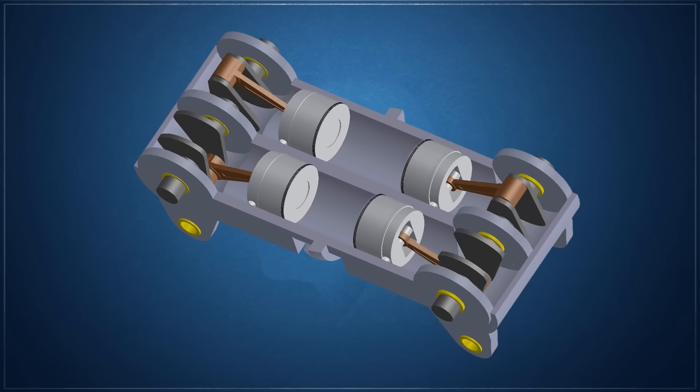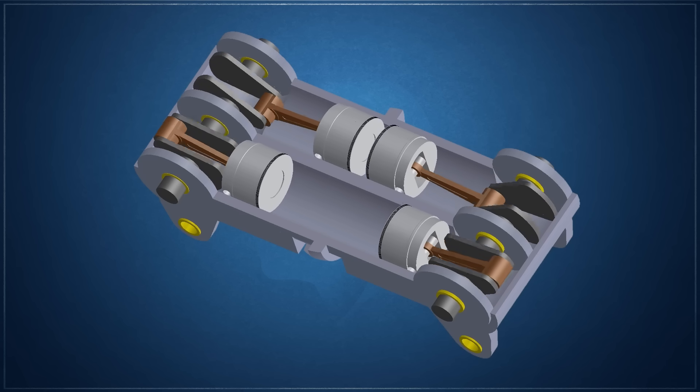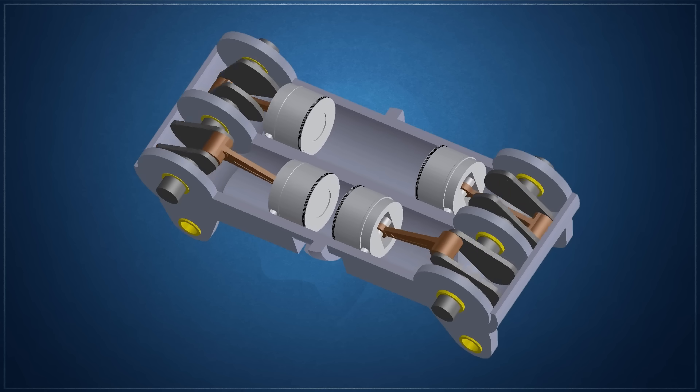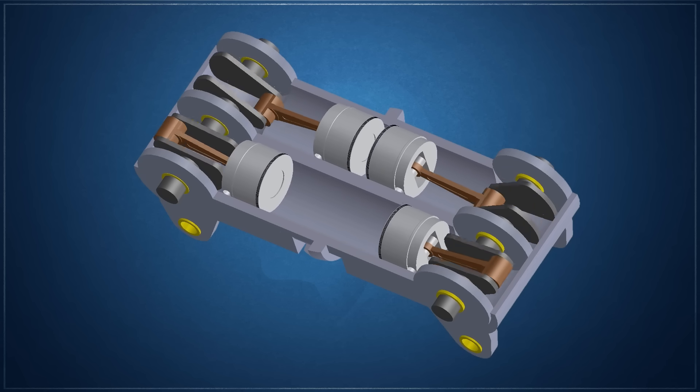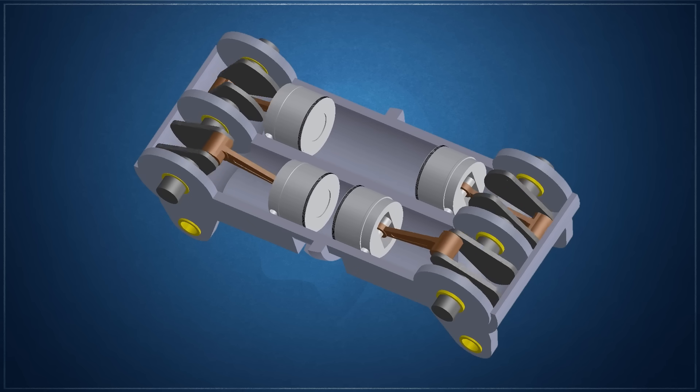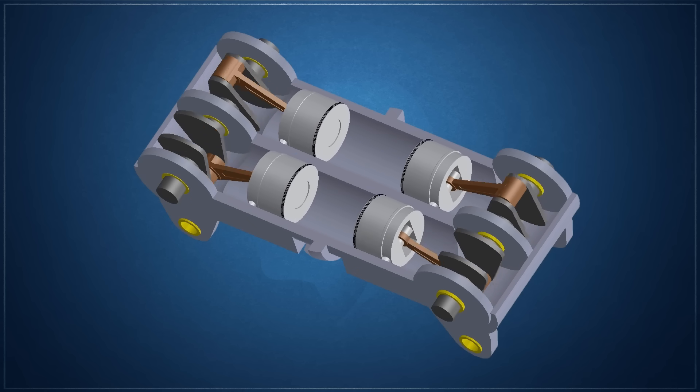An opposed piston design is an engine in which each cylinder has a piston at opposite ends which in turn drives two crankshafts. Interestingly, this design does not incorporate a cylinder head, eliminating the need for a valve train. Despite this advantage, these engines are not as common because of the added weight and complexity when compared to conventional piston engines.